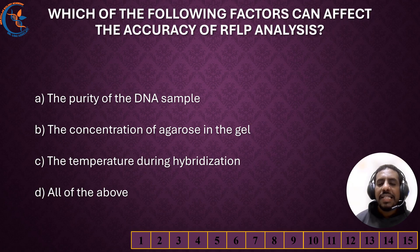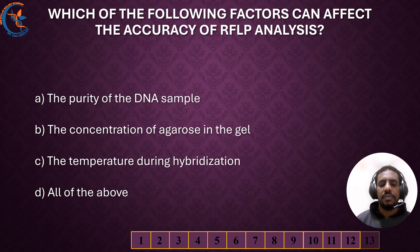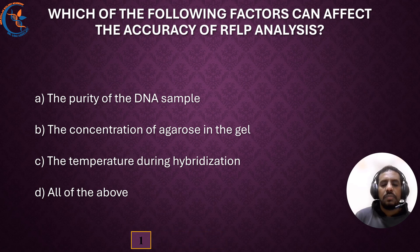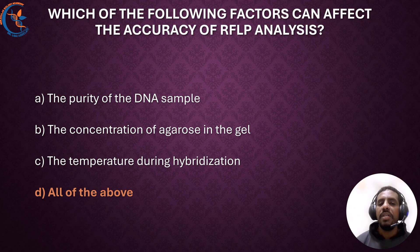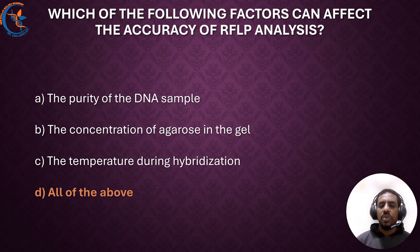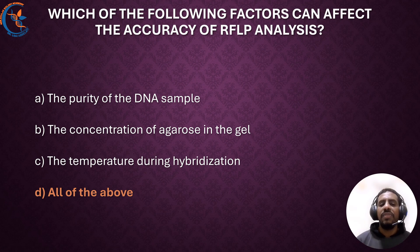Which of the following factors can affect the accuracy of RFLP analysis? The accuracy of RFLP analysis can be influenced by several factors, including the purity of the DNA sample, the concentration of agarose in the gel, and the temperature during hybridization. Each of these factors can impact the resolution and detection of DNA fragments.